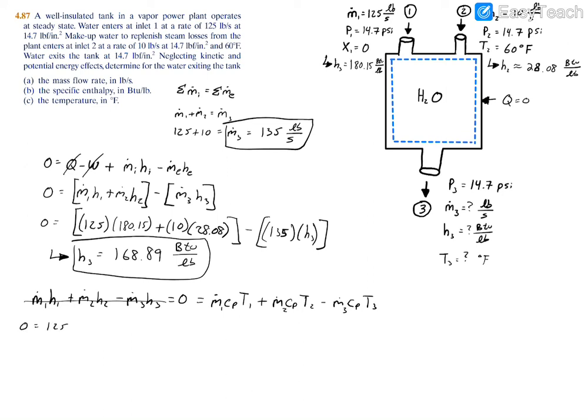We have 0 equals 125 pounds per second times 1.001 BTU per pound degree Rankine times 671.66 degrees Rankine, plus 10 pounds per second times 1.001 BTU per pound degree Rankine times 519.67 degrees Rankine. That's T2 converted to Rankine. Then we subtract the exit, which is 135, the mass flow rate, times the specific heat, multiplied by T3.